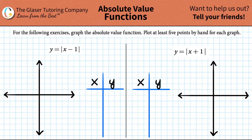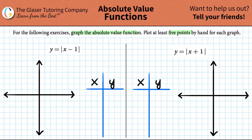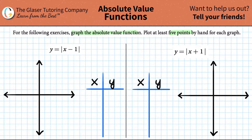For the following exercises, graph the absolute value function and plot at least five points by hand for each graph. We have two graphs here and they want us to plot five points by hand, so I made a little chart for us so that we can have something organized.